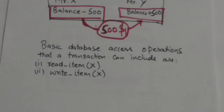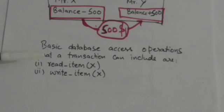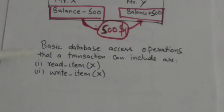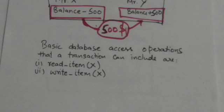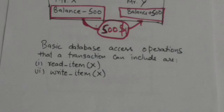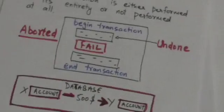The basic database access operations that a transaction can include are: first, 'read item X' — in this operation, a database item whose name is X is read into a program variable. Second, 'write item X' — in this operation, the value of program variable X is written into the database item whose name is X.